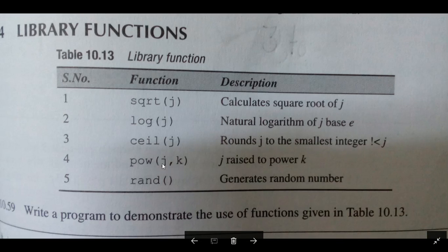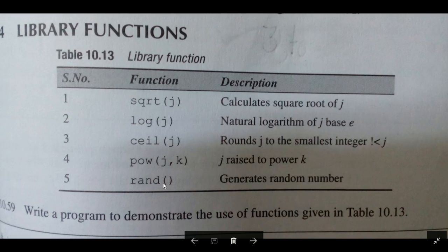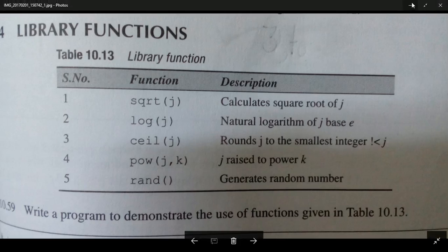The power function is used for calculating J raised to the power K, where J is the base number and K is the exponent. The rand function generates random numbers in the program output.